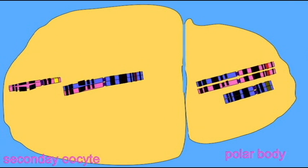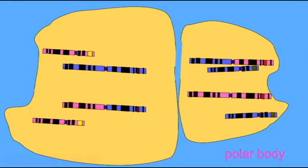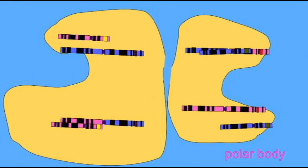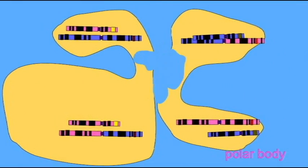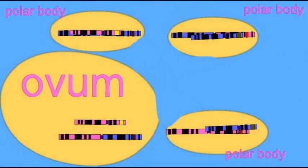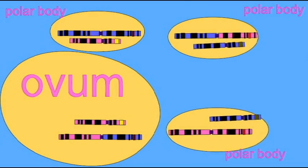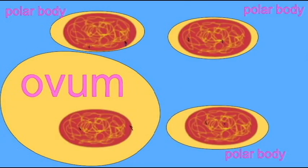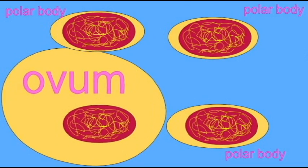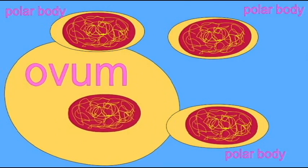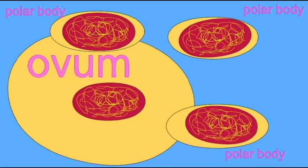In the second round of meiosis, the secondary oocyte produces one single gamete, the ovum, and then a second polar body. The first polar body may or may not divide.